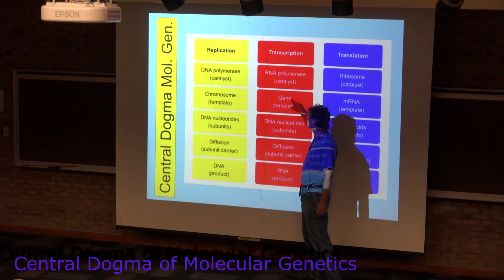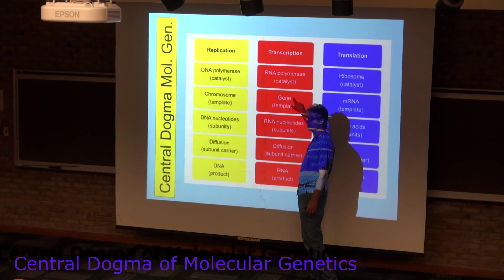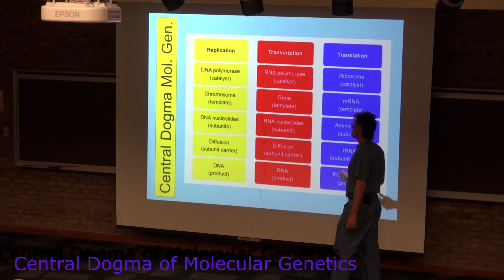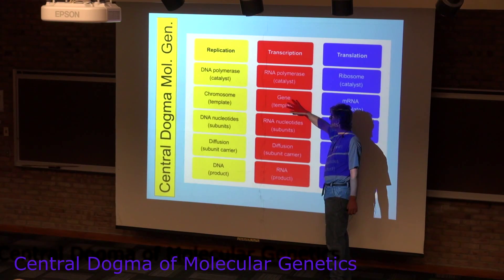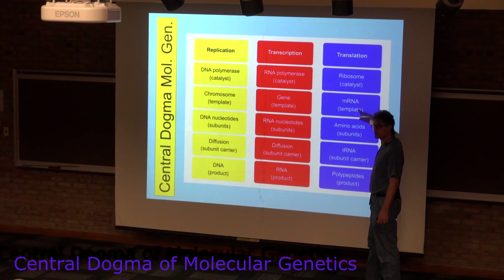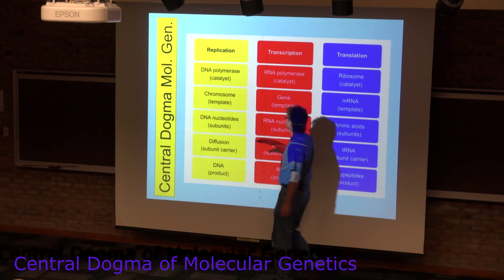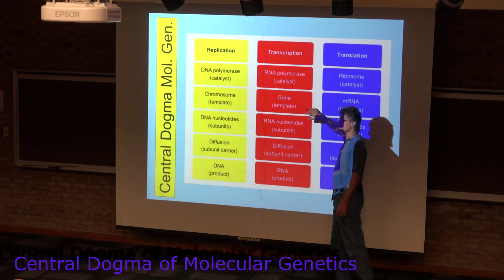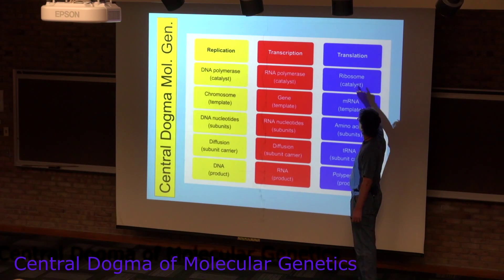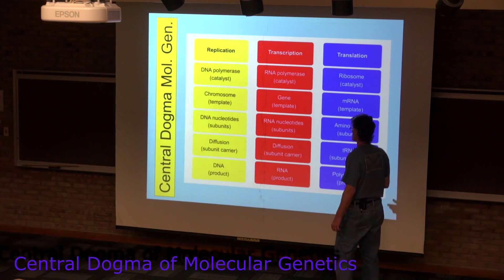What is a gene? That's a central question — central to what biology is all about. A gene is something that is transcribed; it's something that serves as a template for an RNA product. The template for translation is mRNAs — messenger RNAs. So genes and DNA are transcribed, in some cases producing messenger RNAs, which then go to the ribosomes, providing information used to make polypeptides.